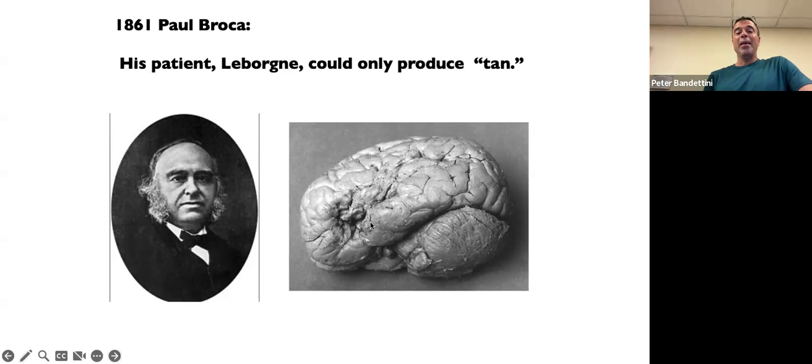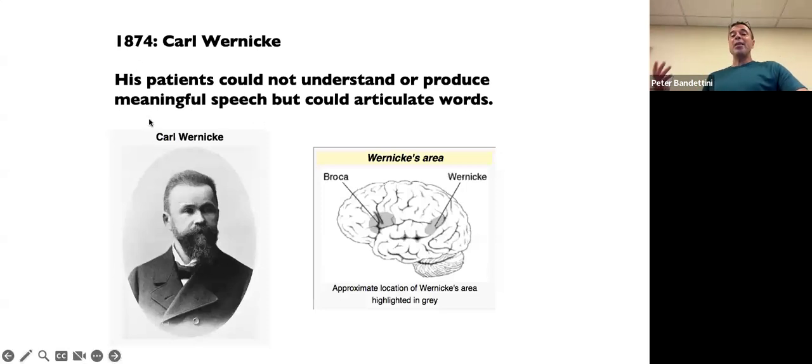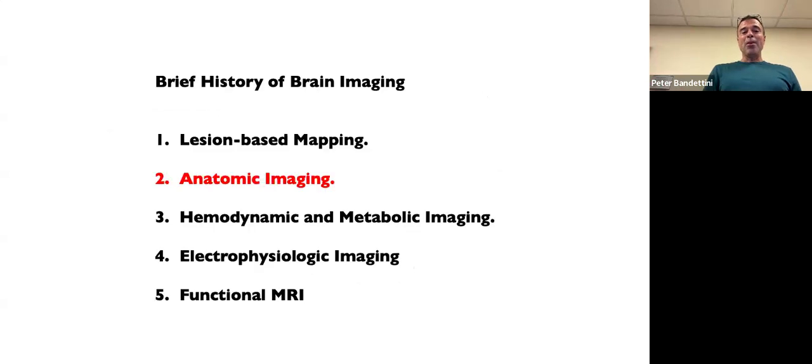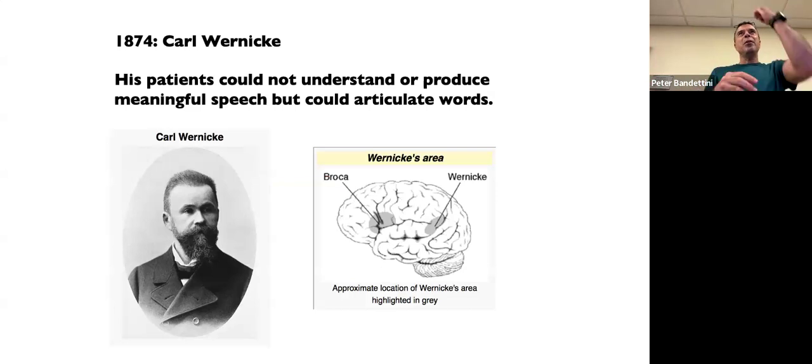They could understand words just fine, but they couldn't produce them. So that was the earliest way that we were starting to get clues about where in the brain function was important. And of course, there's also Wernicke's area. His patients couldn't understand or produce meaningful speech, but they could articulate words. So you have Broca's area for articulation, but then Wernicke's area is right here. His patients had lesions right there. So essentially there's all kinds of work like this.